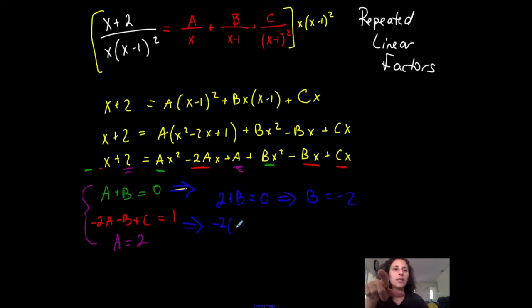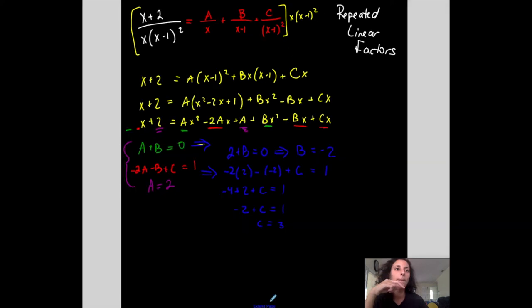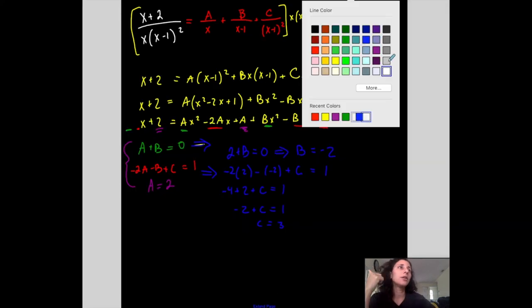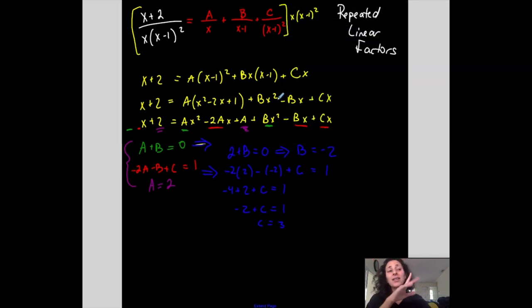Negative 2 times A, which is 2, minus B, which is negative 2, plus C should be equal to 1. Negative 4 plus 2 plus C is 1. Negative 2 plus C is 1. So C is, add 2 to both sides, 3. Done. I got my A, got my B, got my C. That wasn't a bad system.